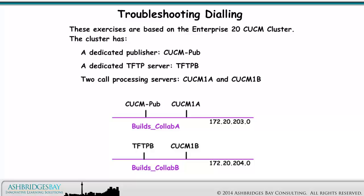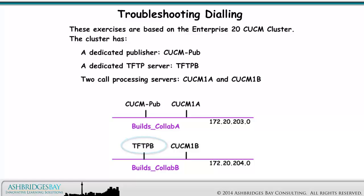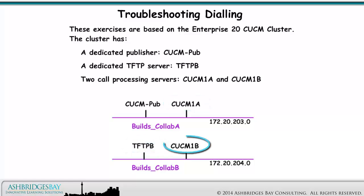The cluster has a dedicated publisher, CUCMPub, a dedicated TFTP server, TFTPB, and two call processing servers, CUCM1A and CUCM1B.